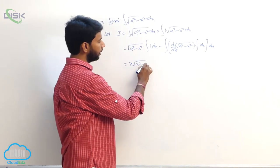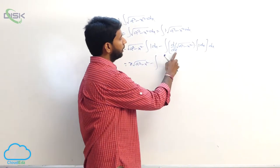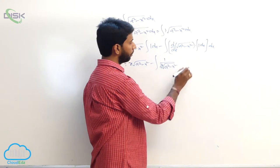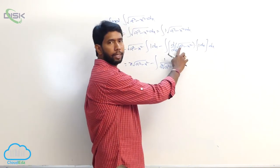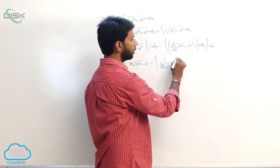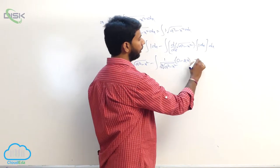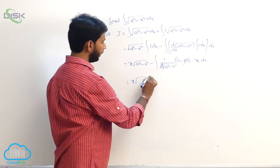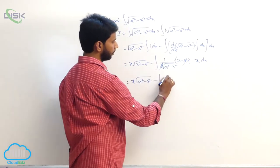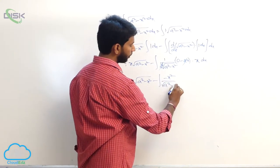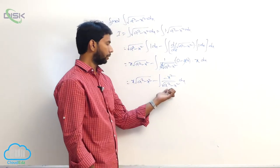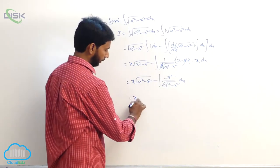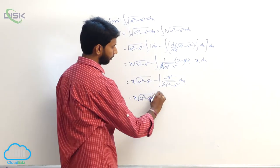That gives x into root of a square minus x square minus integral of: the derivative of root of a square minus x square is 1 by 2 root of a square minus x square, and the inner derivative of a square minus x square gives minus 2x. So we get x into root of a square minus x square minus integral of minus x square by root of a square minus x square dx.